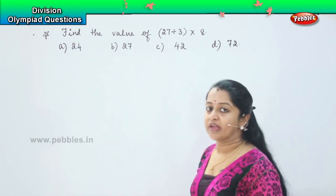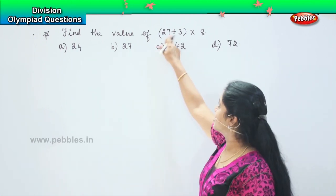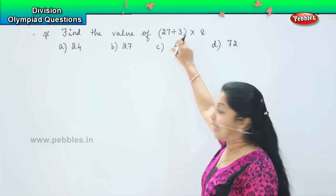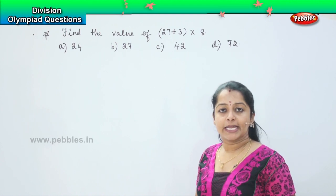So now here they have given us two operations to perform. First we will divide and then whatever answer we will obtain here with that answer we need to multiply by 8.